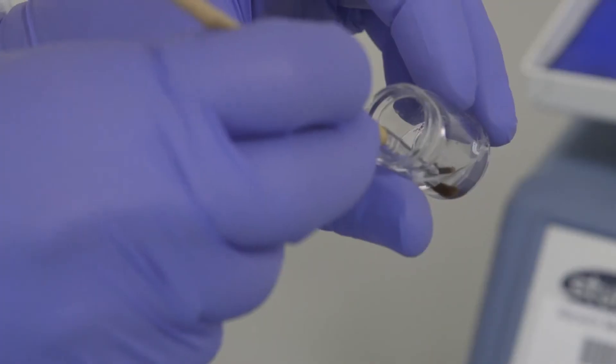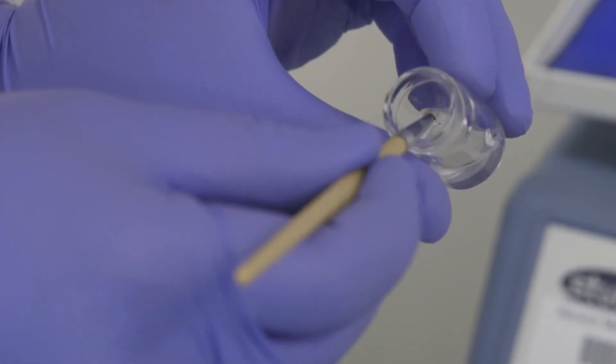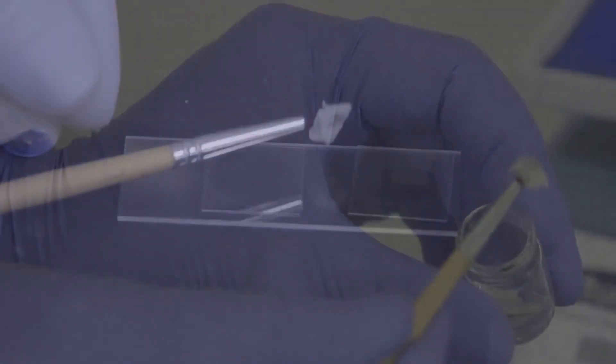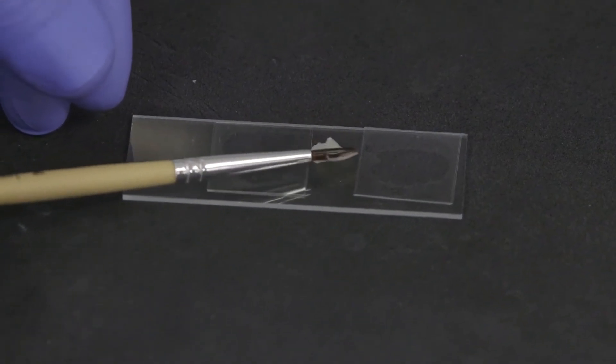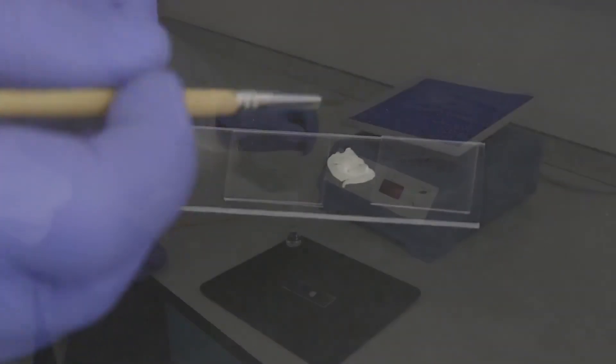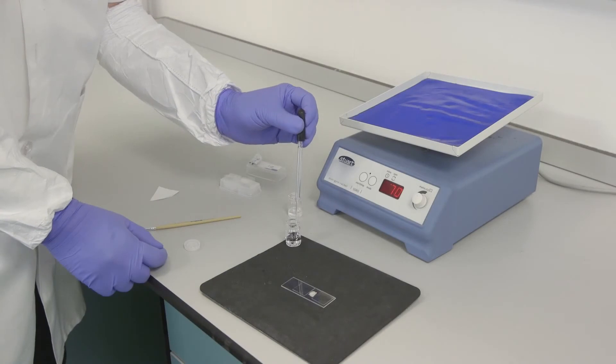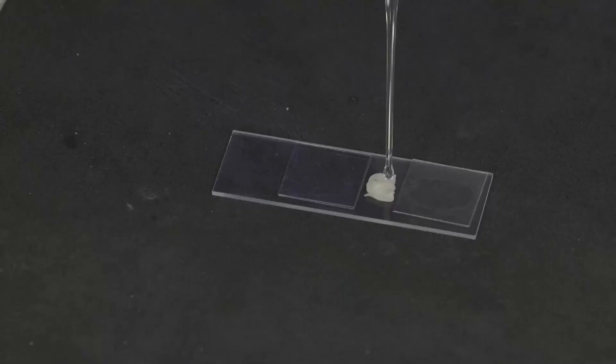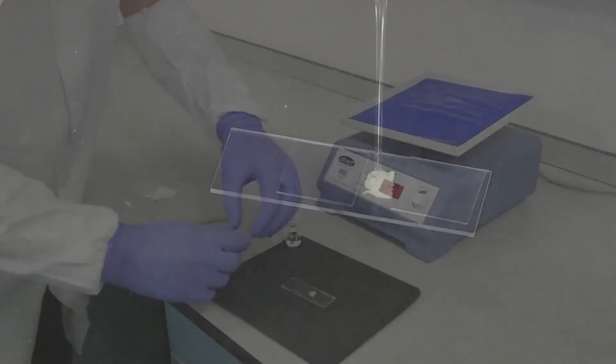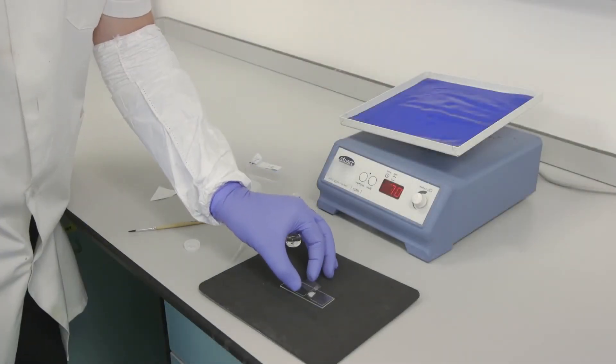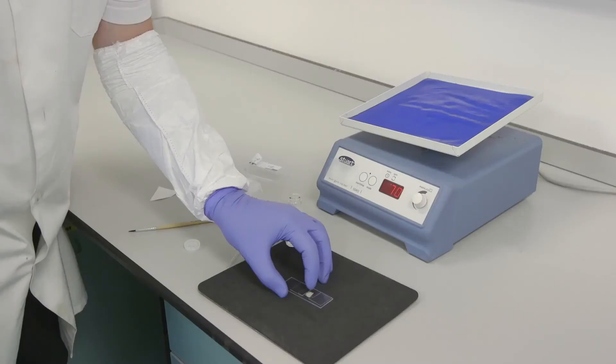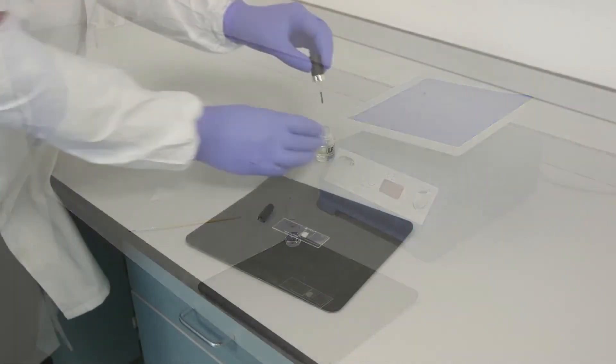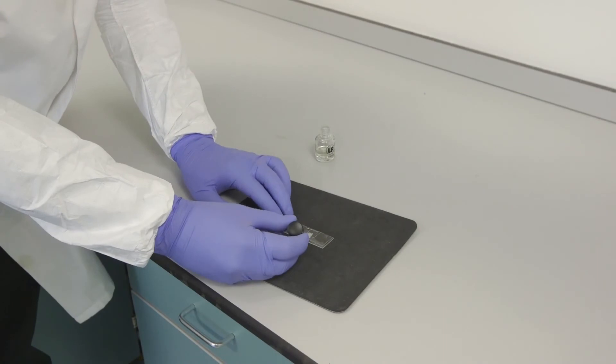Carefully place the slice right side up on the slide and position it with a small brush. Apply the mounting media and coverslip. Use clear nail polish to seal the coverslip.